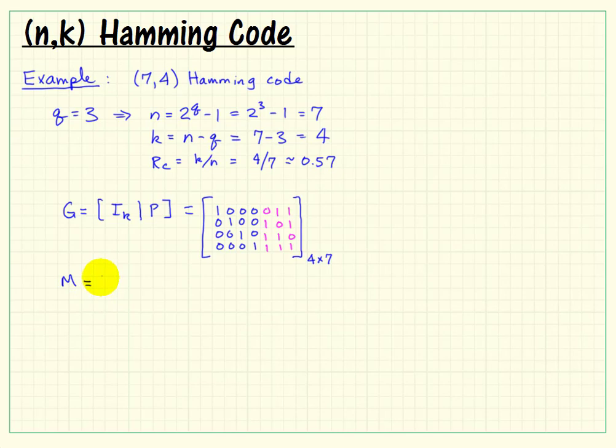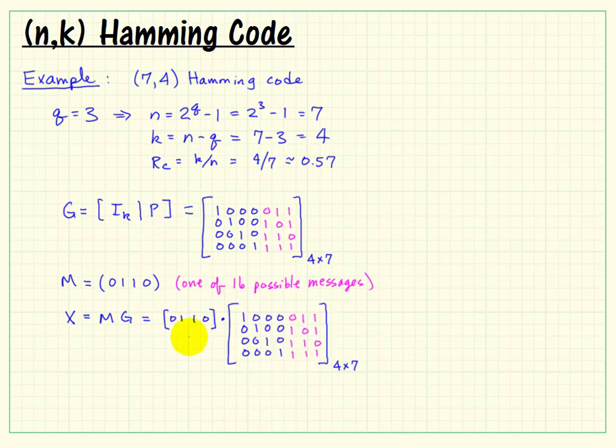Now let's consider a specific choice for a message vector. Imagine that the message we're trying to transmit for a specific block is 0, 1, 1, 0. That's one of 16 possible messages that could be transmitted. Expanding the matrix product, the inner dimensions match, and the outer dimensions tell us the result is going to be a 1-by-7.